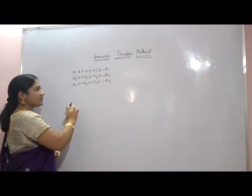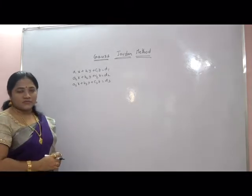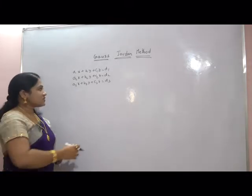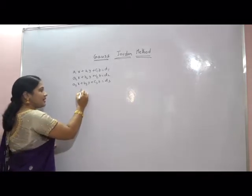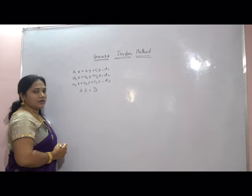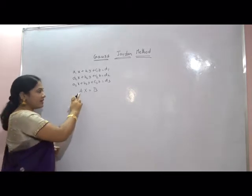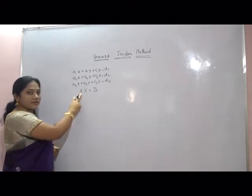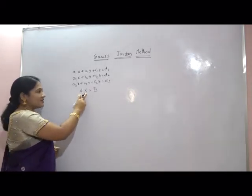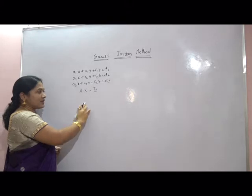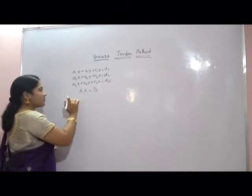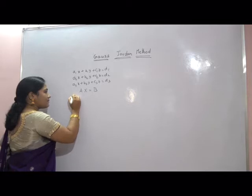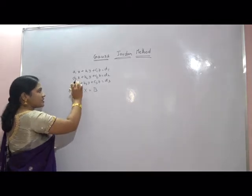The working rule for the Gauss-Jordan method: first, write down the given equations in matrix form AX = B, where A is the coefficient matrix, X is the unknown matrix, and B is the constant matrix.